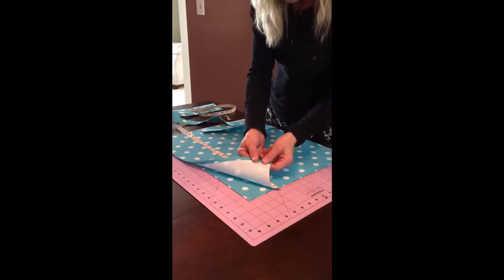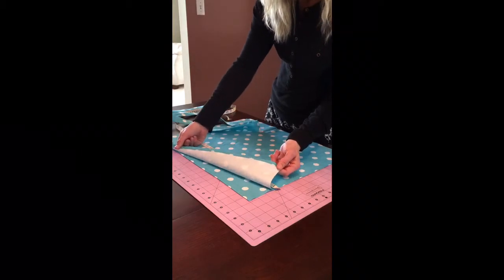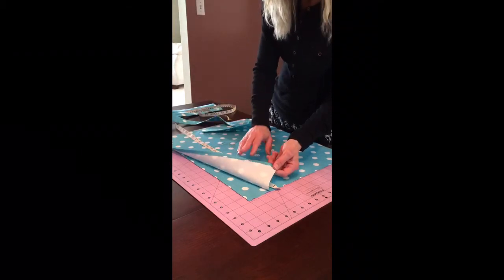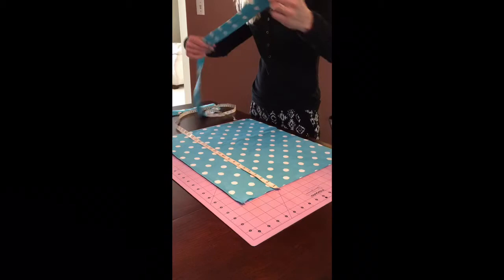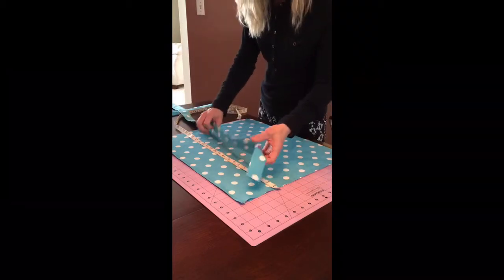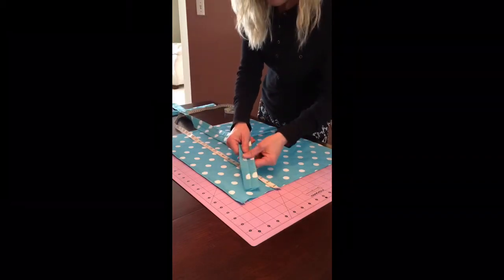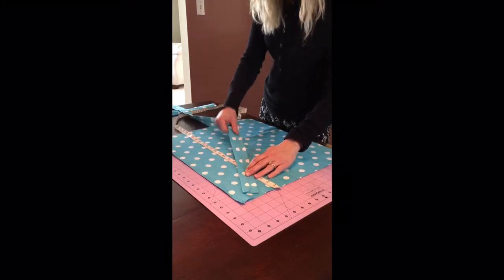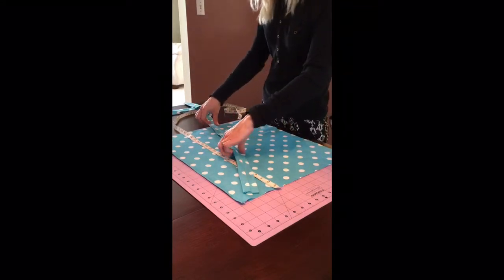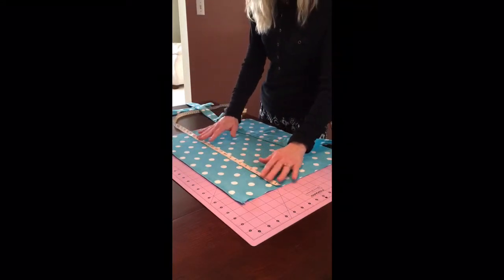So I've gone ahead and sewed that top edge of the bag part. You can see that looks a lot cleaner. I also sewed the straps and turned them, my least favorite thing ever. And then I pressed them with the seam down the middle. Now we'll attach the straps to the bag.